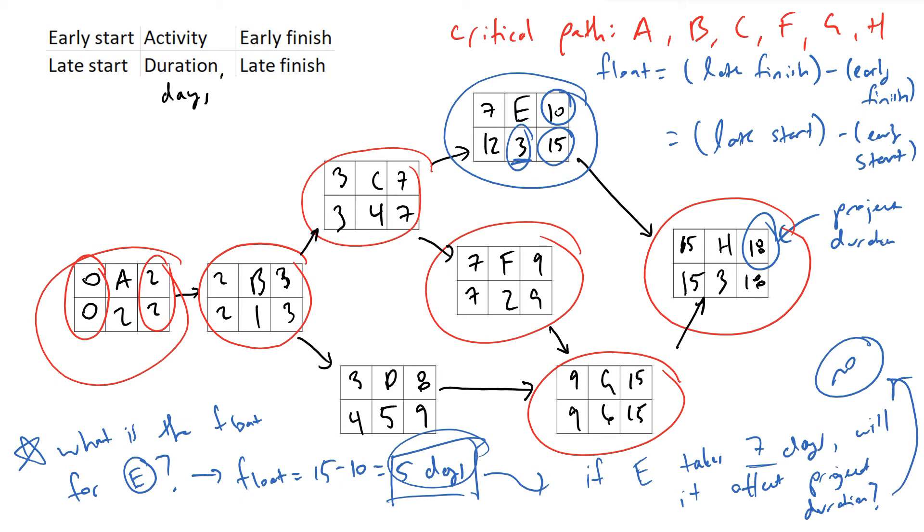And then what you will see, again to reiterate, is that on your critical path, all activities on critical path have float equal to zero.